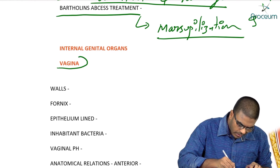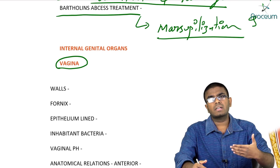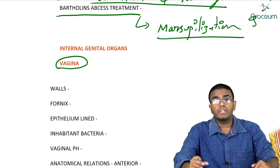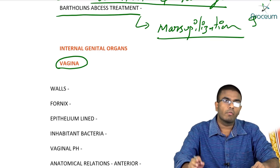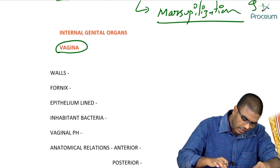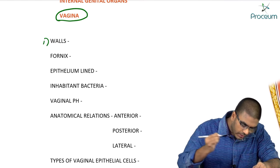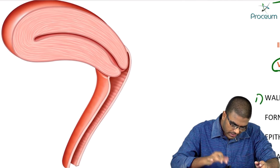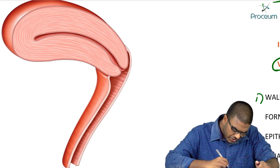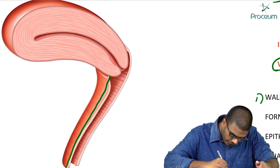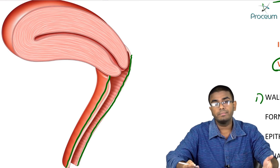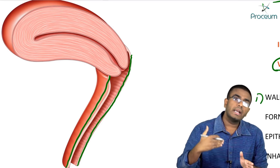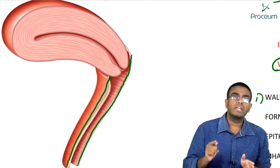Now let's discuss internal genital organs. The internal genital organs are vagina, uterus, fallopian tubes, and ovaries. Starting with the vagina — the vagina is a fibromuscular tube, and an important point is that the anterior wall is shorter than the posterior wall.